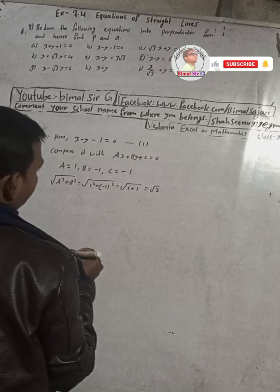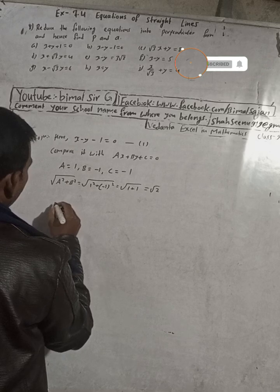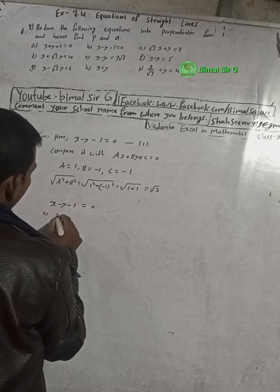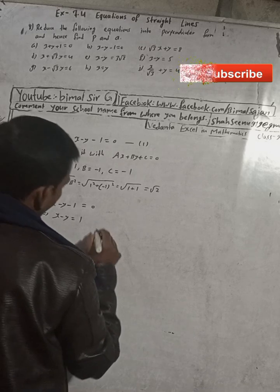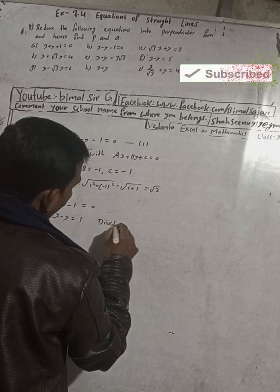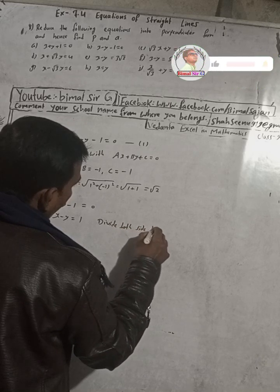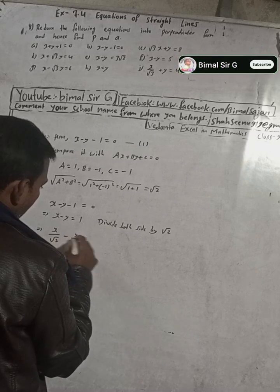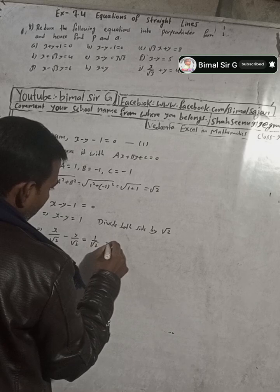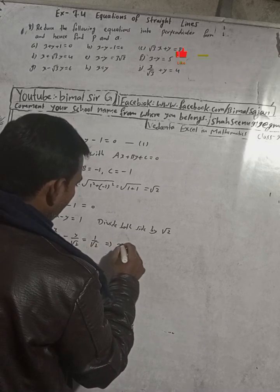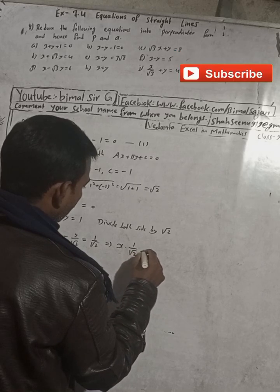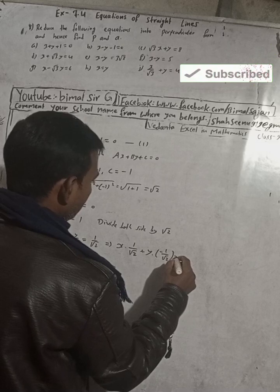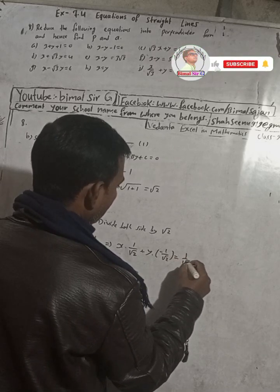Now the equation x minus y minus 1 equals 0 can be rewritten by dividing throughout by root 2. So we get x by root 2 minus y by root 2 equals 1 by root 2. This can further be written as x into (1 by root 2) plus y into (minus 1 by root 2) is equal to 1 by root 2.